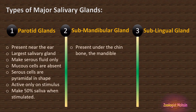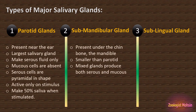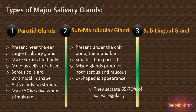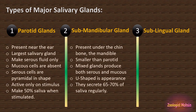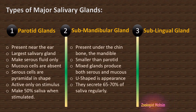The second type is the submandibular gland, present under the chin bone — the mandible — which is why it has that name. It is smaller than the parotid and is a mixed gland, producing both serous and mucus secretions. It is U-shaped in appearance. The submandibular gland secretes 65–70% of saliva regularly, without any stimulation, making it the primary source of resting saliva in the mouth.